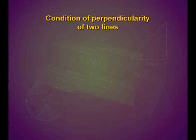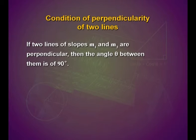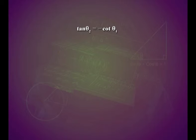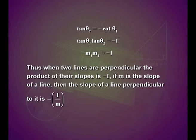Now let us look into the condition of perpendicularity of two lines. If two lines of slopes m₁ and m₂ are perpendicular, then the angle theta between them is 90 degrees. We have theta₂ equals theta plus theta₁, and theta₂ equals 90 degrees plus theta₁. So tan theta₂ equals tan(90 + theta₁), which implies tan theta₂ equals minus cot theta₁. Therefore, tan theta₁ times tan theta₂ equals minus 1, which implies m₁ times m₂ equals minus 1. Thus, when two lines are perpendicular, the product of their slopes is minus 1. If m is the slope of a line, then the slope of a line perpendicular to it is minus 1 upon m.